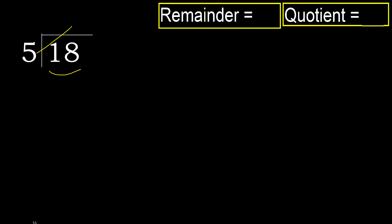5 multiplied by 4 is 20. 20 is greater, so try multiplied by 3. 15 is not greater, ok.